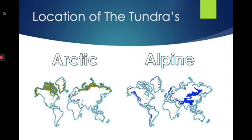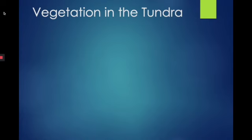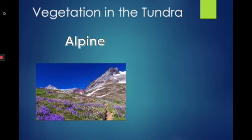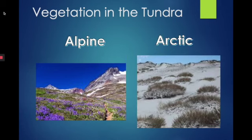So let's take a look at some of the vegetation we might find within these two types of tundras. Here we have the alpine tundra and the arctic tundra. What differences do you notice about the types of vegetation? The alpine plants grow at high elevation, and some examples might be perennial grasses, cushion plants, sedges, and forbs.